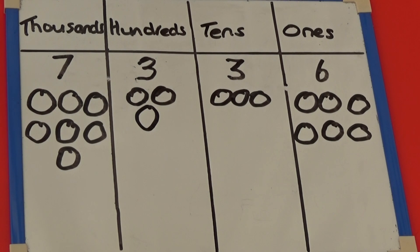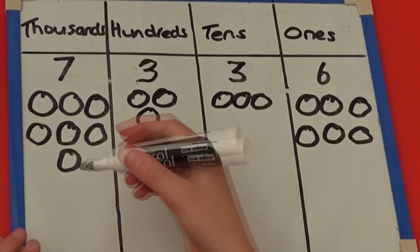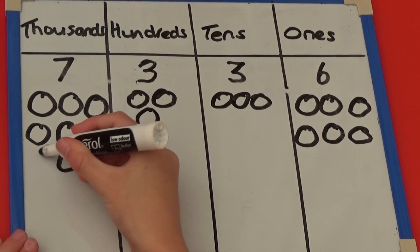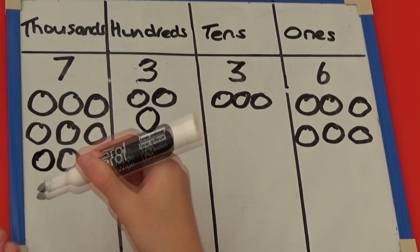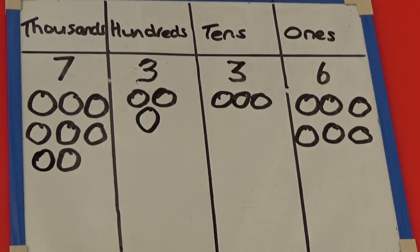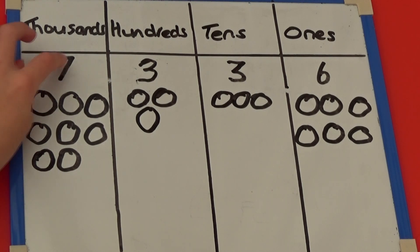Then to add 1,000, I'm going to draw another 1,000 counter, which makes my number 8,336.